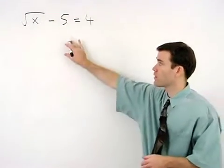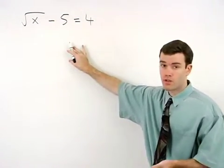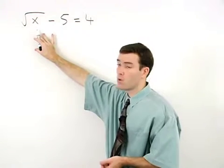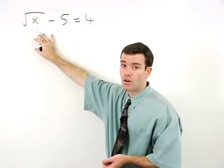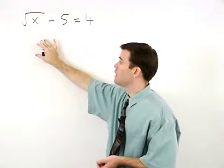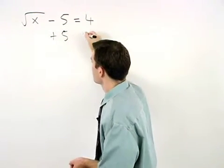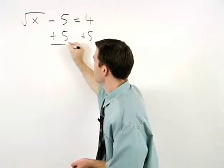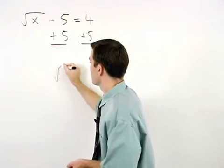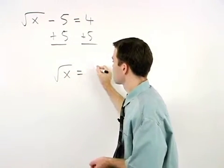To solve this radical equation, our first task is to get the square root by itself on the left side. To do that, we add 5 to both sides of the equation to get the square root of x equals 9.